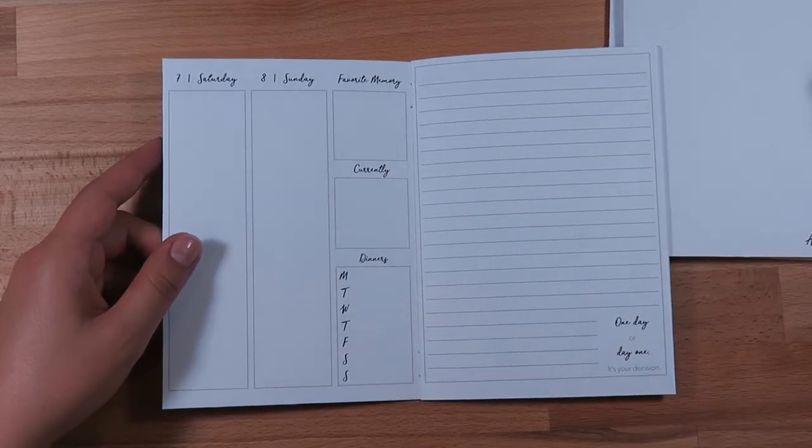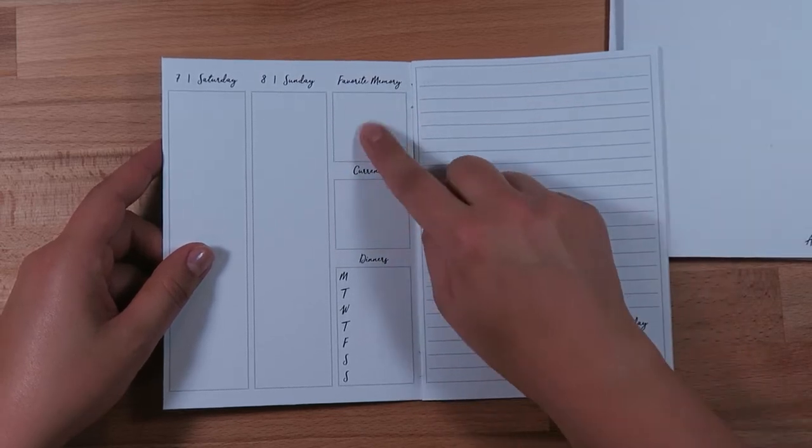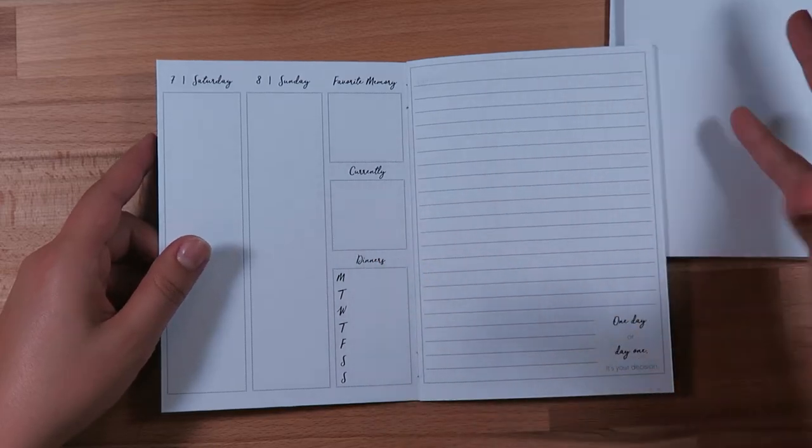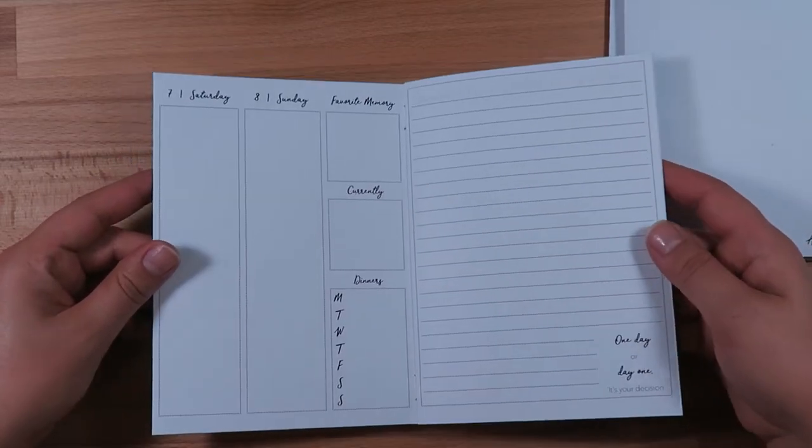On the first two pages, you have Monday through Friday. Then on the second part, you have Saturday, Sunday, and then a section I use as a favorite memory, the same as a happy thought.